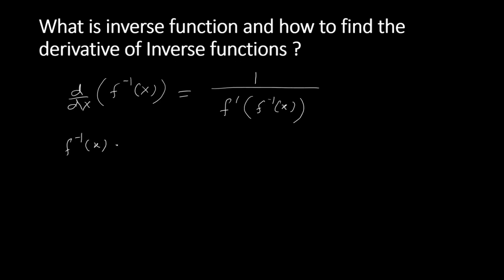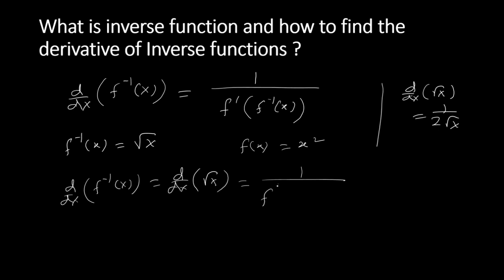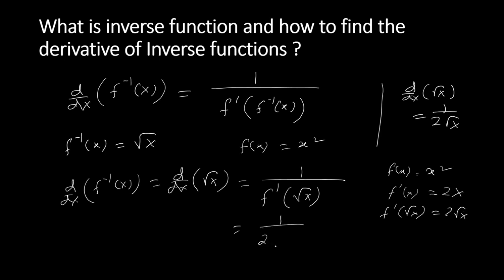Let f⁻¹(x) = √x and f(x) = x². We know that d/dx[√x] = 1/(2√x). Using the inverse function derivative formula: d/dx[f⁻¹(x)] = d/dx[√x] = 1 / f'(√x). Since f'(x) = 2x, we get f'(√x) = 2√x, so the result is 1/(2√x). Therefore, using this formula we can find the derivative of inverse functions.